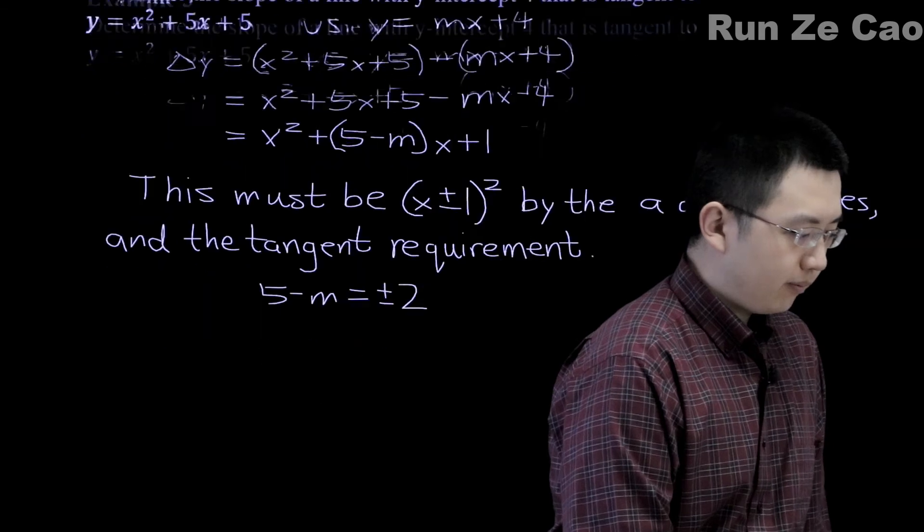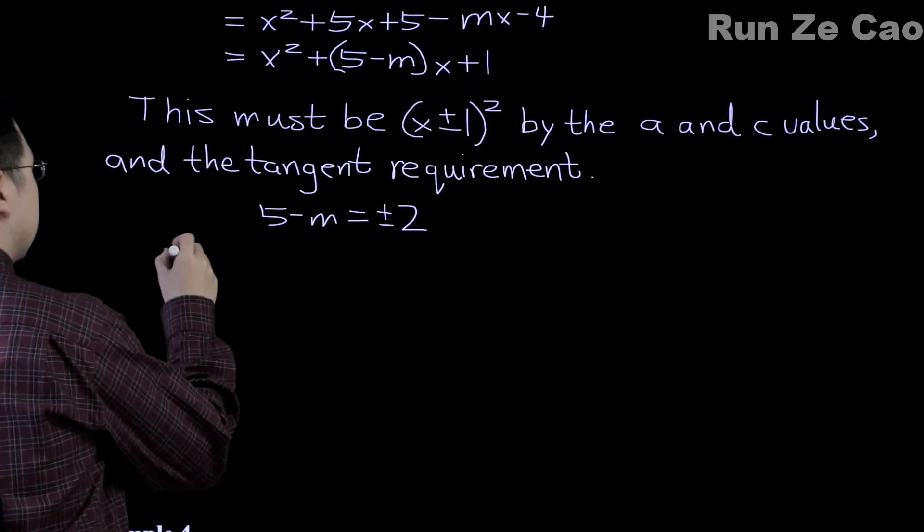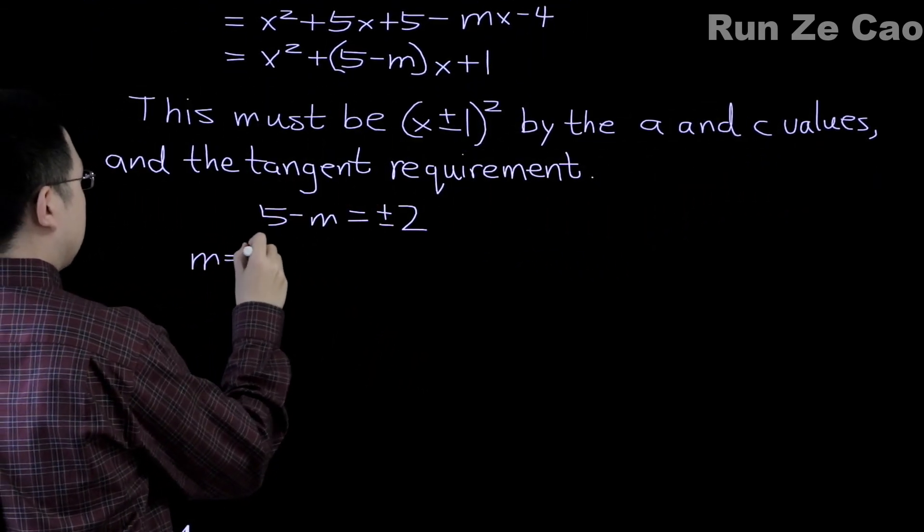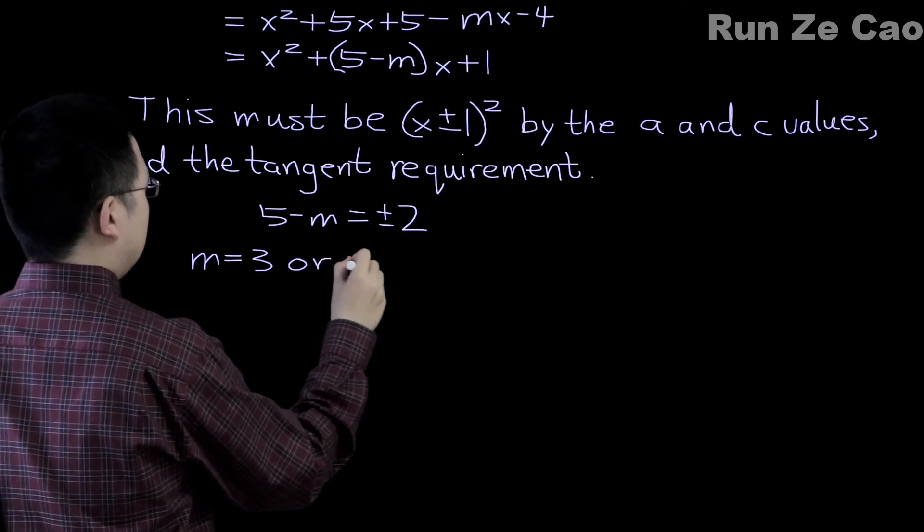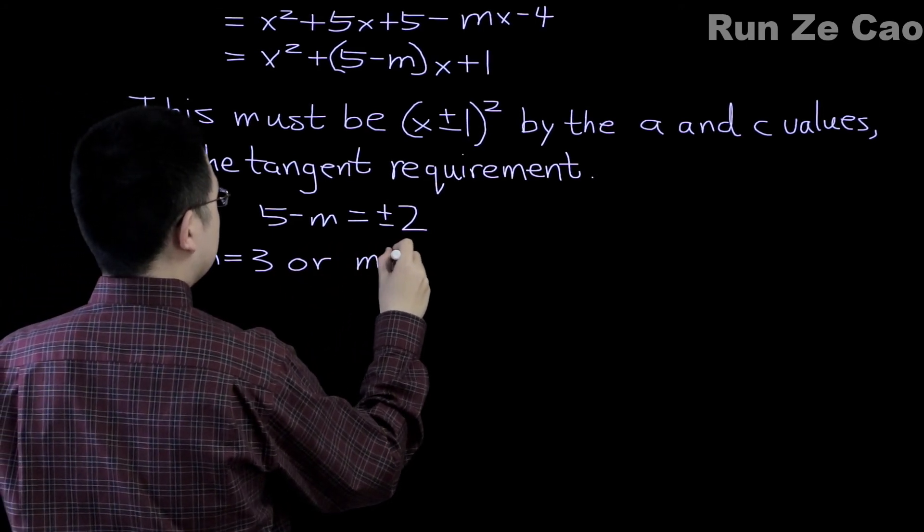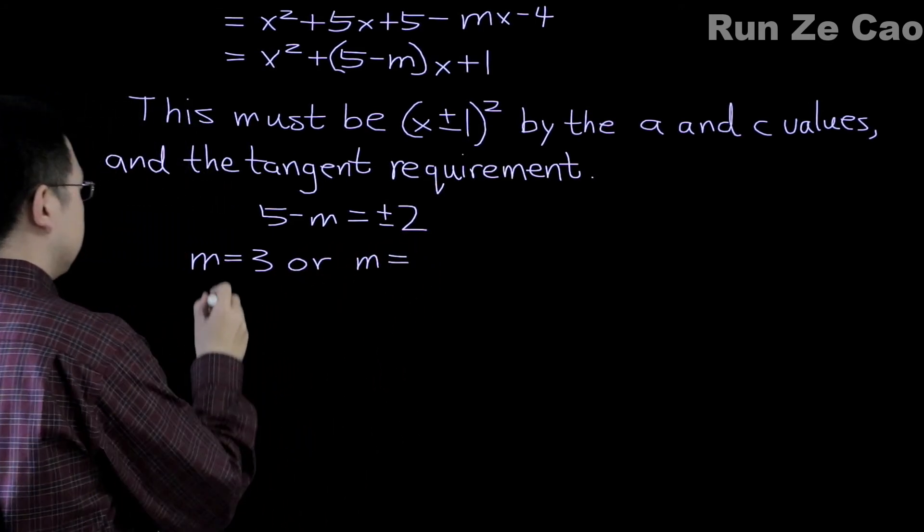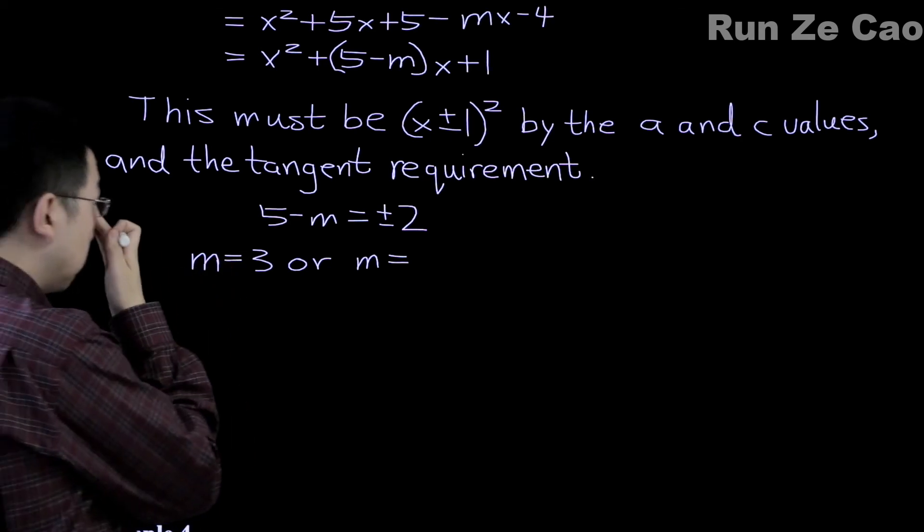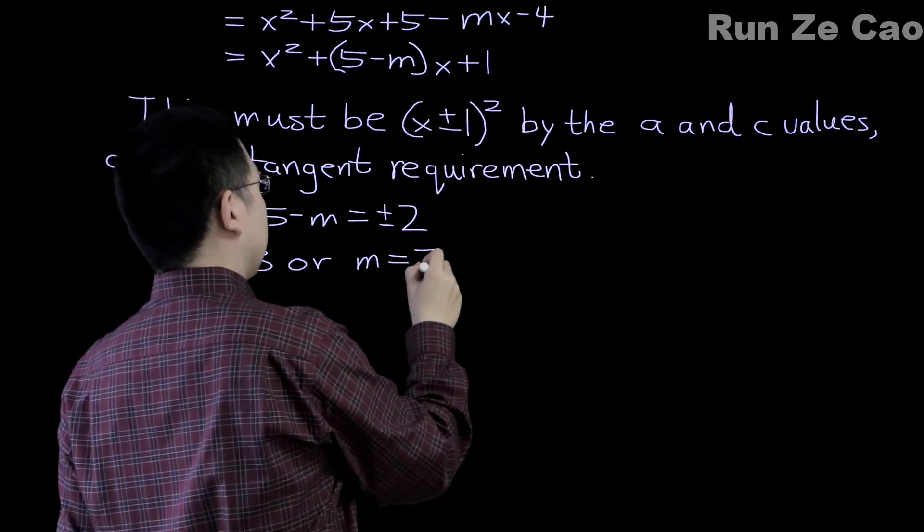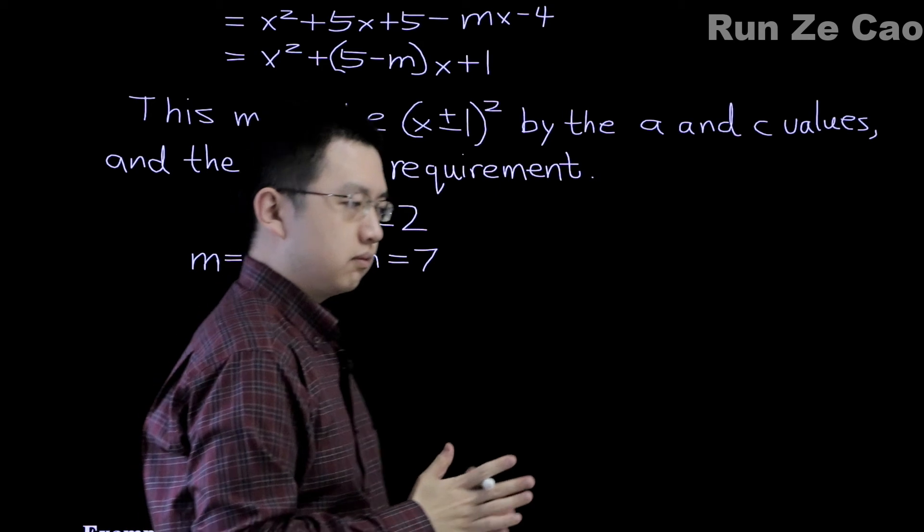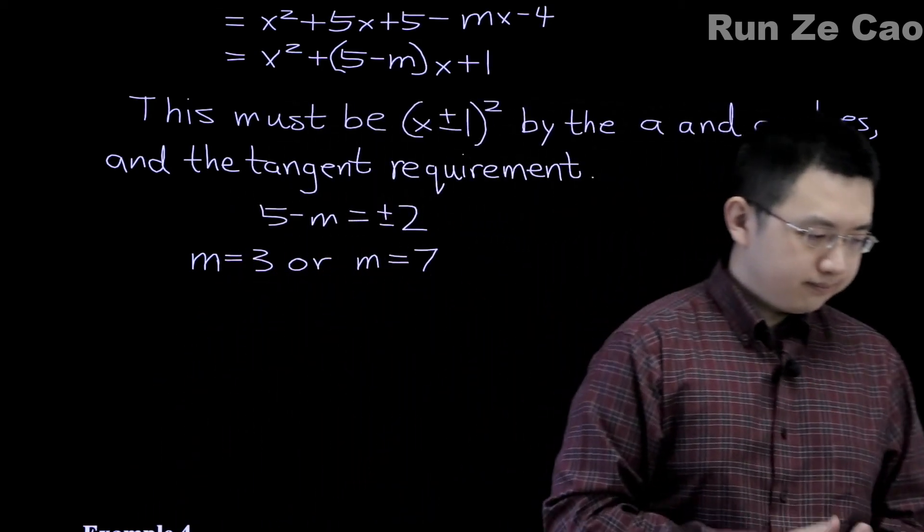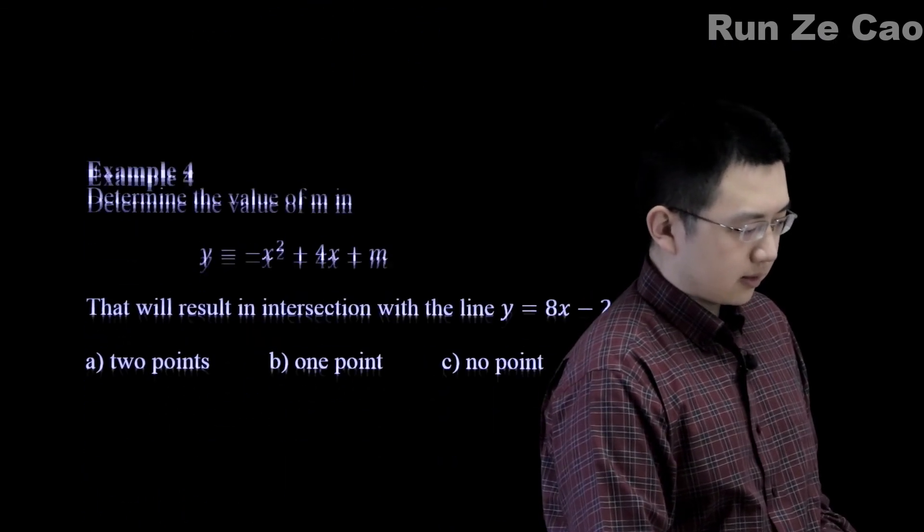So this will give us 5 minus m equals plus minus 2. So m equals 3 or m equals 7. All right, next example.